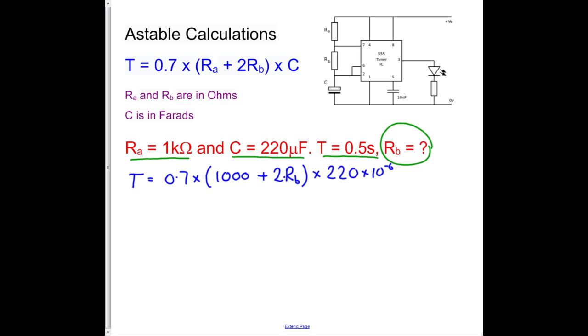I'm then going to do a bit of rearranging. So I'm going to bring this bracket here. It's going to be what I want to be just here, next to my equals sign. So I'm going to go 1,000 plus 2RB is equal to, and on the other side I've got T, which is 0.5 divided by, open brackets, 0.7 multiplied by 220 times 10 to the minus 6.